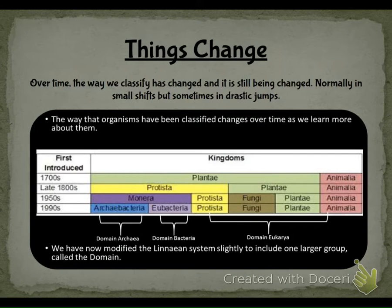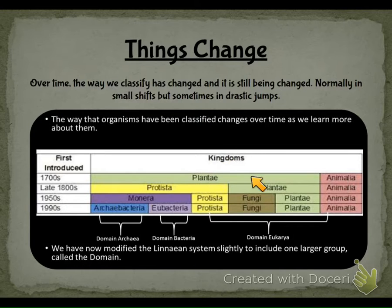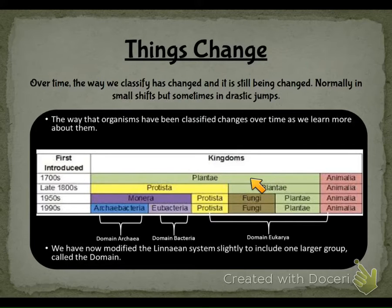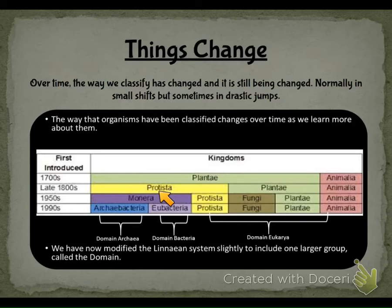Historically, in the 1700s they had two kingdoms — plants and animals — plantae and animalia. These words are in Latin or Greek, which we'll discuss. In the late 1800s, they started categorizing protista, grouping microscopic animal-type or plant-type things together under that name.